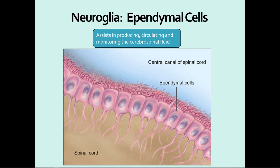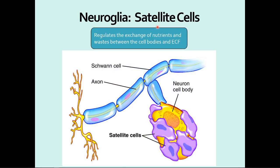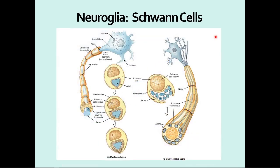Those first four neuroglia cells are found in the central nervous system. The last two are found in the peripheral nervous system. The first PNS neuroglia is the satellite cell — kind of a catch-all cell in the peripheral nervous system. It helps with exchanging nutrients and waste and holds things together, doing a little bit of everything.